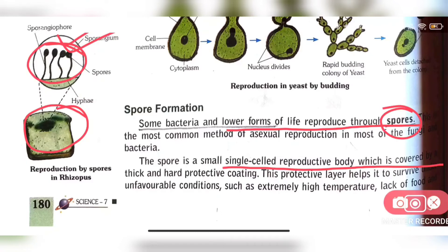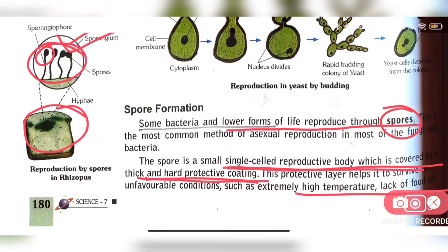Spores are single-celled reproductive bodies covered by a thick and hard protective coating. This protective layer helps the spore to be protected. Each of the spores is covered with a hard protective coating. When they sense that conditions are favorable for reproduction, they respond accordingly.